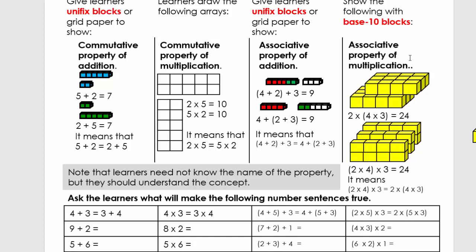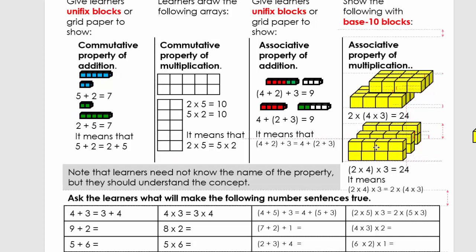Let's go to the associative property of multiplication. What I have here is two layers and each layer has four times three cubes. So I write it as two times — one layer is in brackets — four times three. So two times (four times three) equals 12, which equals 24. In another example, I have a rectangular prism made up of two times four cubes repeated three times. So (two times four) times three equals eight times three equals 24. This means (two times four) times three equals two times (four times three). Pause the video and explain this to an adult.